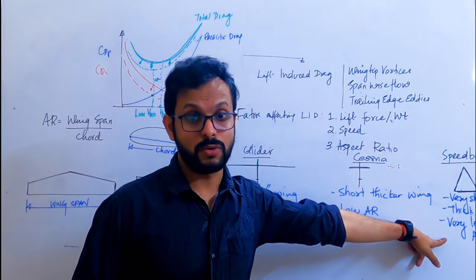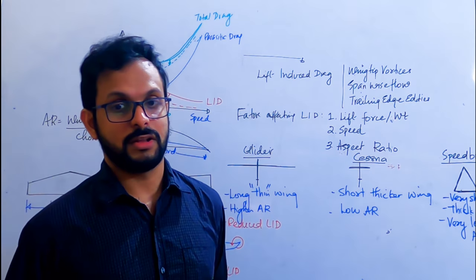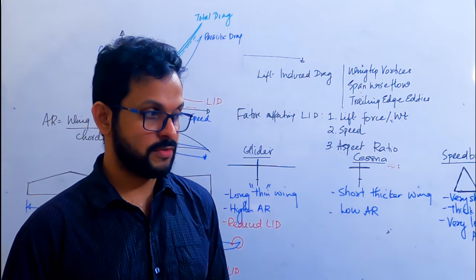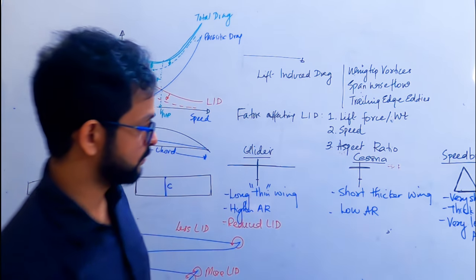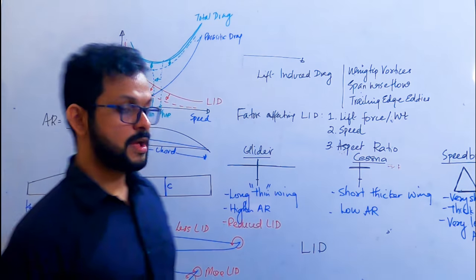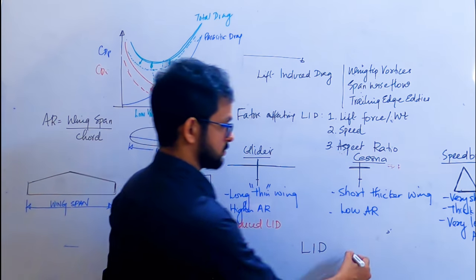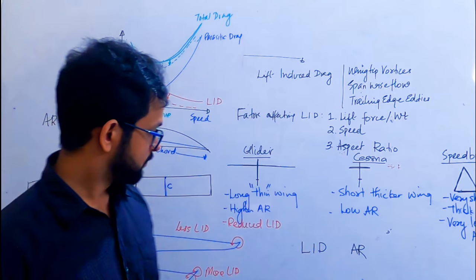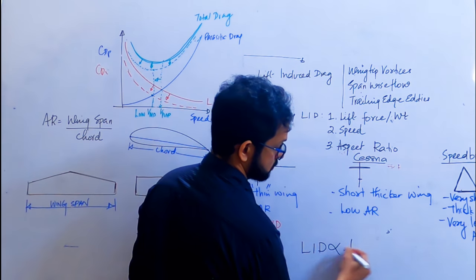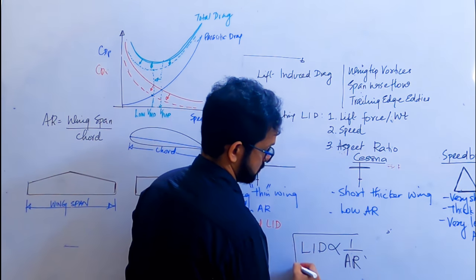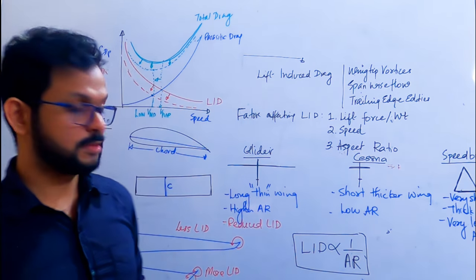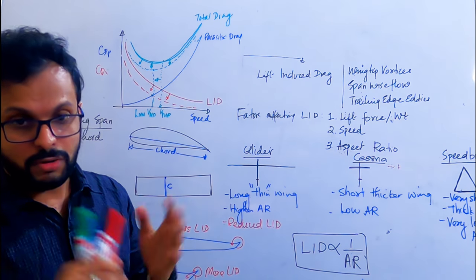Did you understand how the aspect ratio is connected to the purpose for which the aircraft is designed? We cannot have a very high aspect ratio on a speedbird because we need it to fly faster, and that would produce so much bending moment at the wing root. So: lift-induced drag is proportional to one divided by aspect ratio.